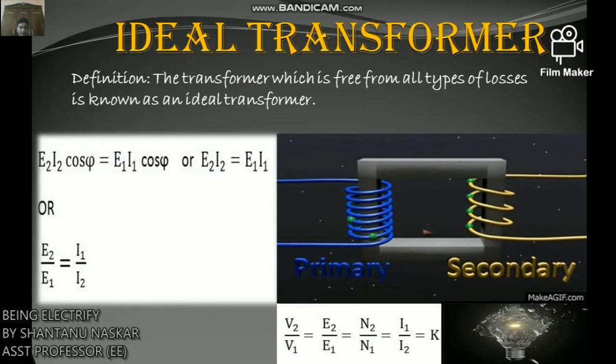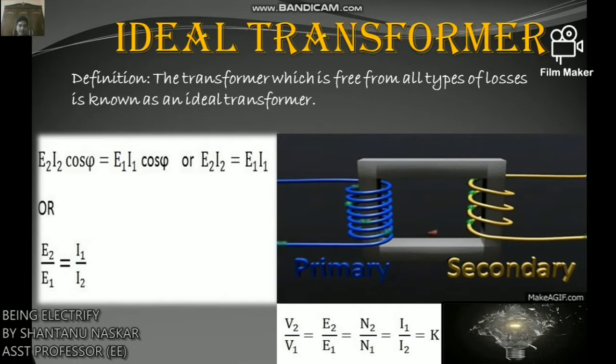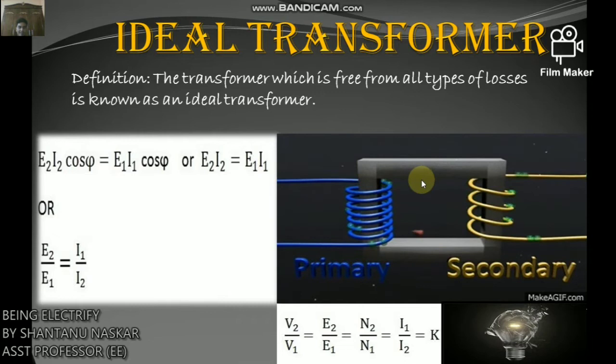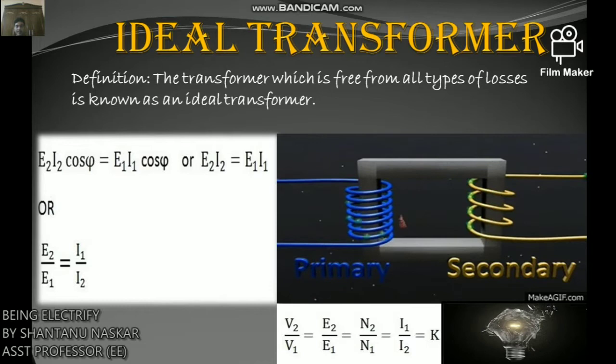It is an imaginary transformer that has no core loss, no ohmic loss, and no leakage flux. The ideal transformer has the following important characteristics: number one, the resistance of the primary and secondary winding becomes zero; number two, the core has infinite permeability, meaning less magnetizing current is required to magnetize the core; and number three, the leakage flux of the transformer becomes zero.